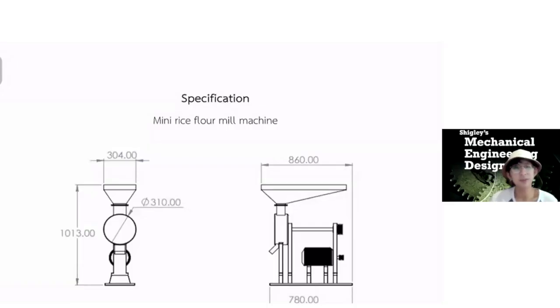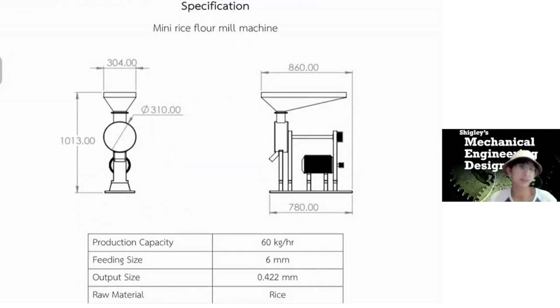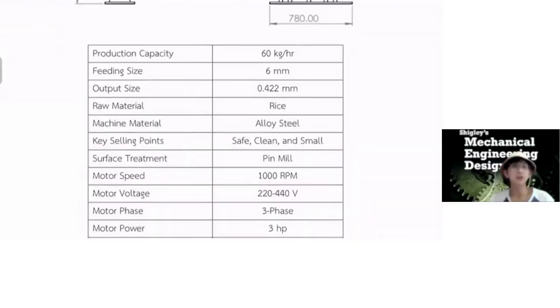This is the specification of the rice flour mill machine. This is the basic and fundamental dimension of this machine. We have a height of 1013 mm, the width of 304 mm, and the length is 860 mm. We got the production capacity about 60 kg per hour or 1 kg per minute.